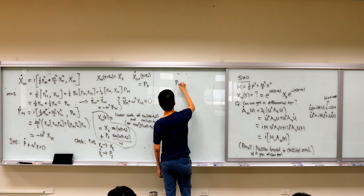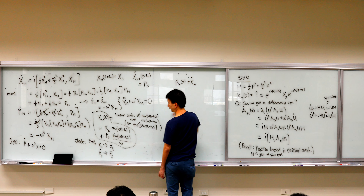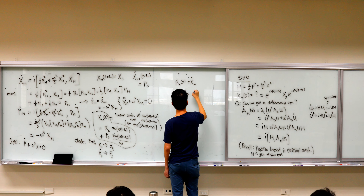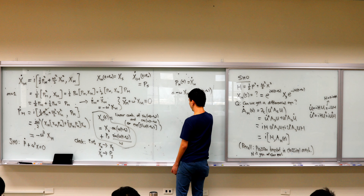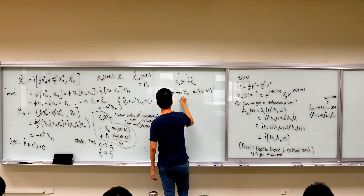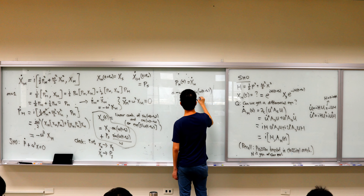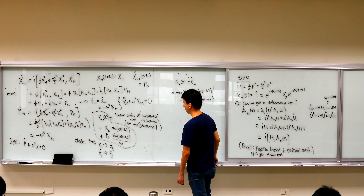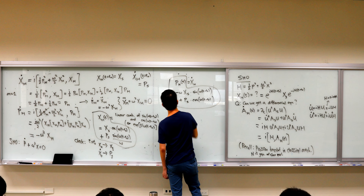P_H is simply x_H dot. This gives: p_H(t) = minus omega·x_S·sine(omega·(t minus t-naught)) plus p_S·cosine(omega·(t minus t-naught)). That is the solution for the Heisenberg picture momentum operator.